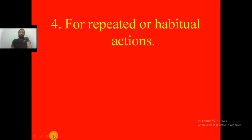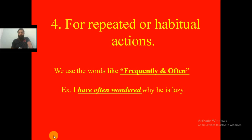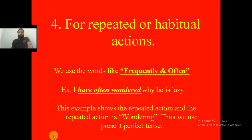The fourth usage is that we use the present perfect tense for repeated or habitual actions — actions that are done regularly. We use words like 'frequently' and 'often' in the present perfect tense. For example: 'I have often wondered why he is lazy.' This example shows the repeated action of wondering, so we use the present perfect tense.